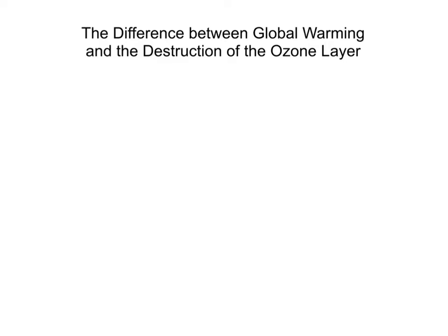Hello everyone. In this video we're going to be talking about the difference between global warming and the destruction of the ozone layer. Those are two topics that are usually talked about when studying increasing populations and sustainability. When we think about populations and their impact on the environment, we usually consider global warming and how it arises and the effects that it has. The reason I'm making this video is to explain the difference between the two, because they are related to some degree but they are two different processes.